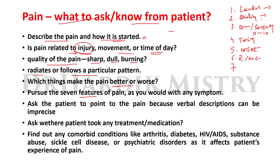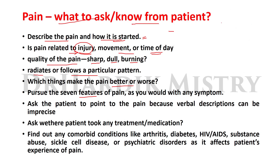Seventh, associated manifestations: ask the patient whether they have noticed anything else accompanying the pain, and correlate those findings. To summarize, the seven points are: location, quality, quantity or severity, timing, onset, remitting or exacerbating factors, and associated manifestations. You must find out all these features by asking the patient.